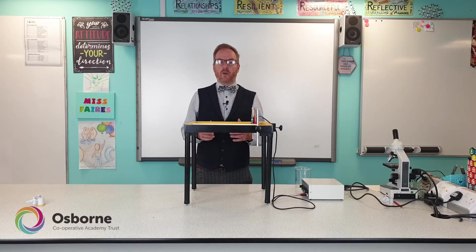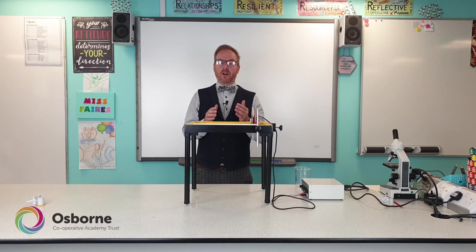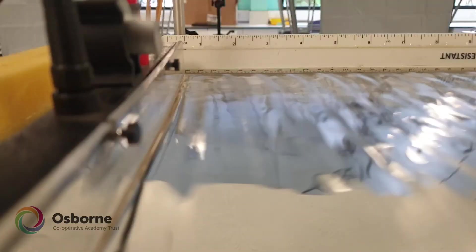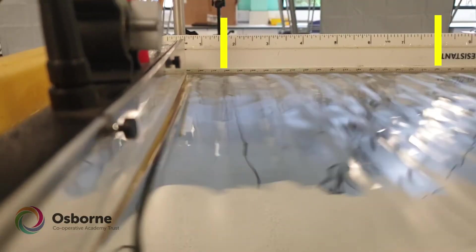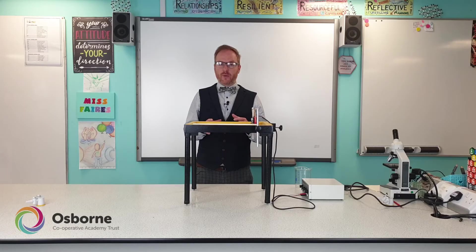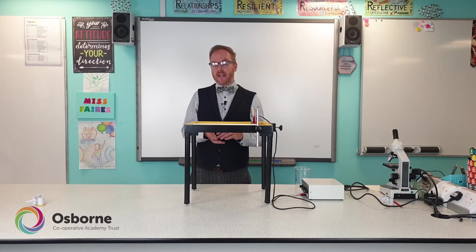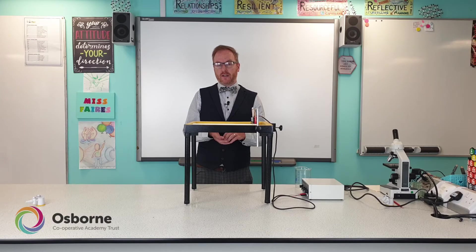The next instruction in the Core Practical is to measure the time it takes for one wave to go past two points in the ripple tank. Let's mark a gap in this ripple tank where we would like our wave to travel and time how long it takes to go from point A to point B. So we've got our time on screen now. So far, we've been able to estimate the size of the wavelength, time how long it takes for a wave to pass two points in a ripple tank, and count how many waves pass a point in ten seconds.